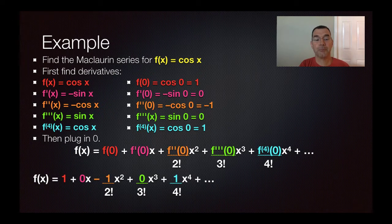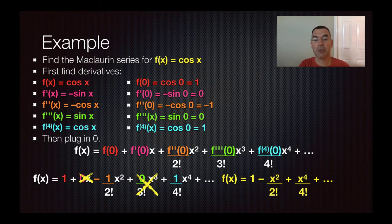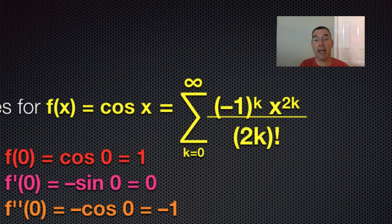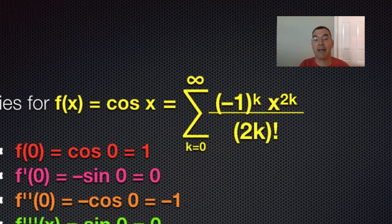Once I write that down, I can see if anything can be simplified. Anything that has a zero in it evaluates to zero, so I don't need to write those terms. I just need to write the one, minus x squared over two factorial, plus x to the fourth over four factorial, and so on. The cosine function can be written as the sum as k goes from zero to infinity of negative one to the k times x to the 2k over 2k factorial, since we're only using the even exponents and even factorials.